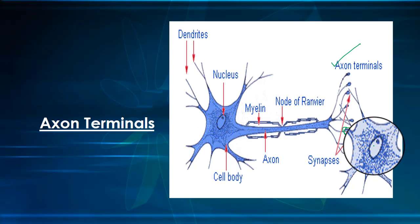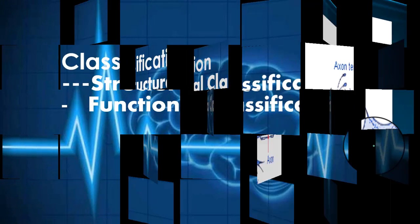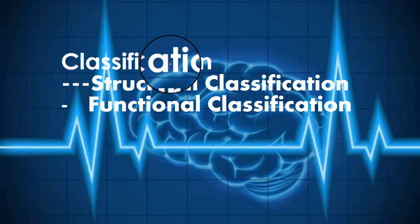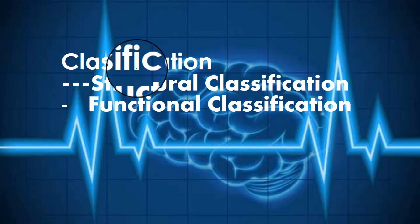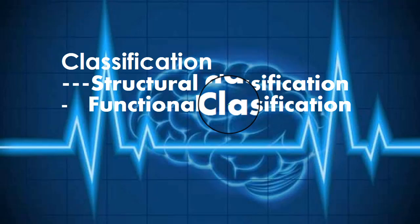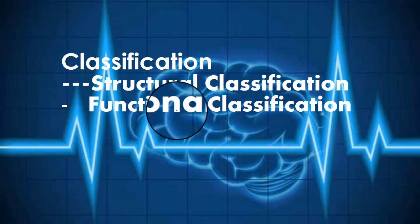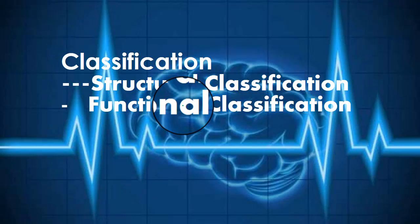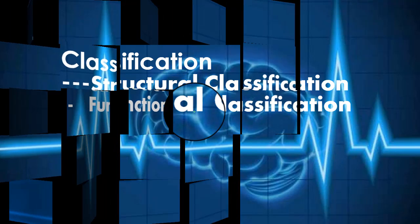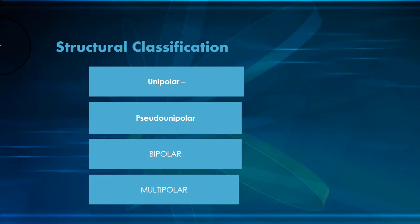That covers the key structures present in the neuron. Next we will talk about the broad classification of neuronal structures. Neurons can be classified by structure or by function. Neurons with different functions have different structures, which is visible histologically.